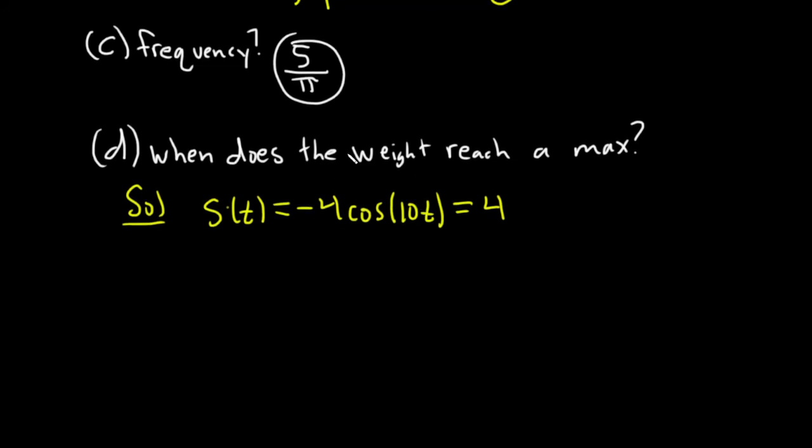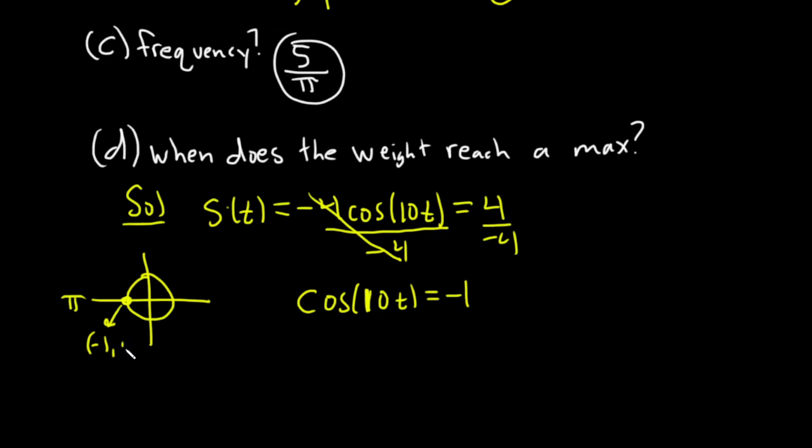So to solve this, we can divide both sides by negative 4. And so then we get cosine of 10t equals negative 1. And the first time that the cosine function will be equal to negative 1 is at pi, because on the unit circle, cosine is the x-coordinate at pi, and this ordered pair here is negative 1, 0.